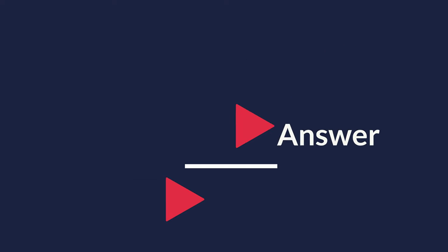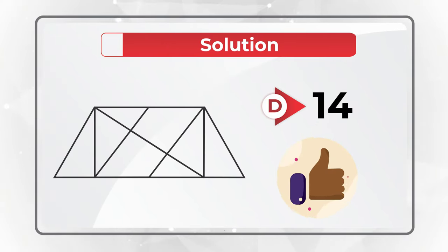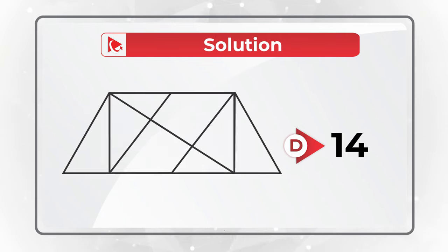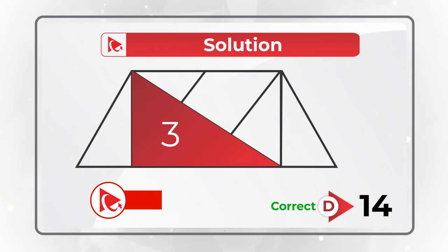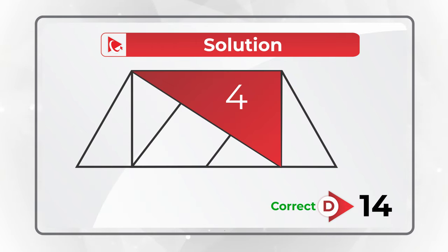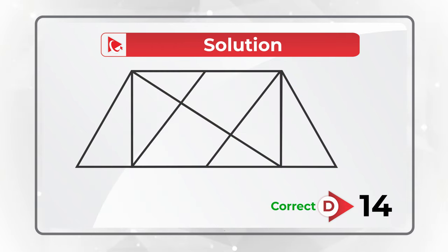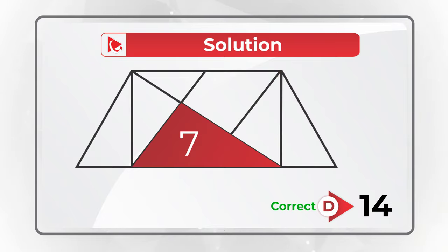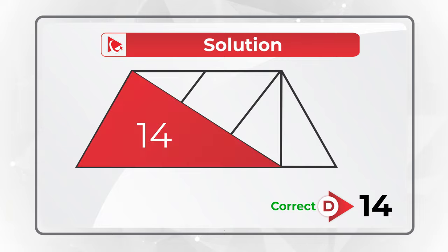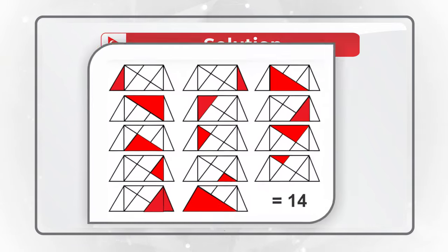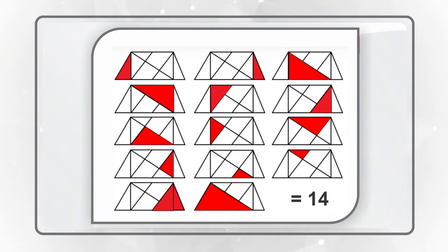The correct choice is D: 14 triangles. Let me show them all to you — all 14 are here: 1, 2, 3, 4, 5, 6, 7, 8, 9, 10, 11, 12, 13, and 14. Did you see them all? Isn't it amazing how many triangles can fit into this simple shape? I learned something — hopefully you did too, and now know how to answer similar problems on the test.